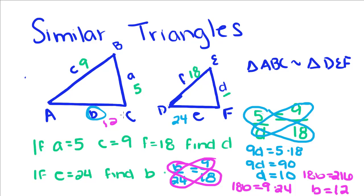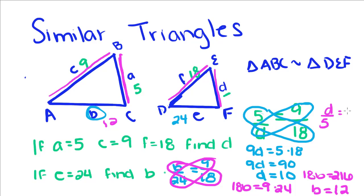So the thing to remember when we're setting up these proportions to find the length of these sides, we want to keep the proportions consistent. So in the first one, I started with 5, which is this side of this big triangle. So I'm going to put that over this side of the little triangle, and I'm going to go back to the big triangle and put this side over this side of the little triangle. Now we could do the opposite, and have the little triangle over the big triangle. It doesn't matter as long as we keep it consistent.